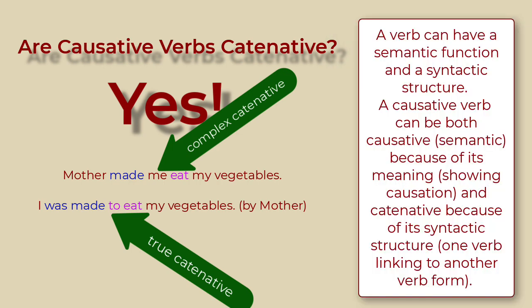As is the case with causative verbs, a verb can have a semantic function and a syntactic structure. A causative verb can be both causative — semantic, because of its meaning showing causation — and catenative, because of its syntactic structure: one verb linking or catenating to another verb form.